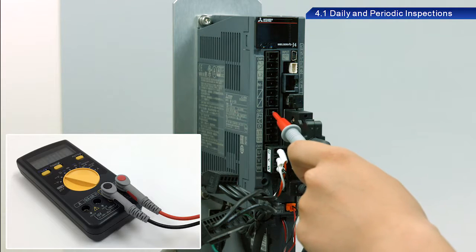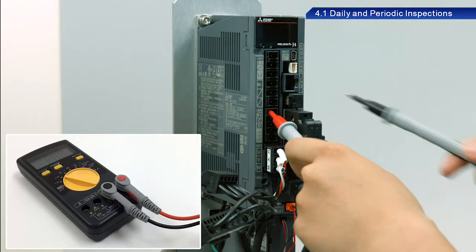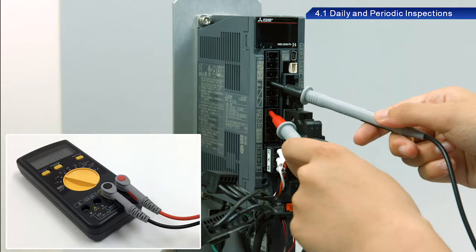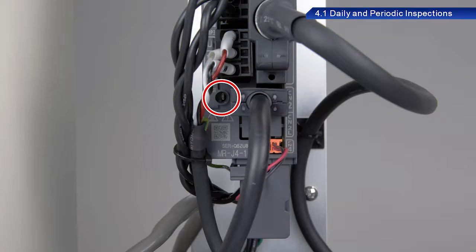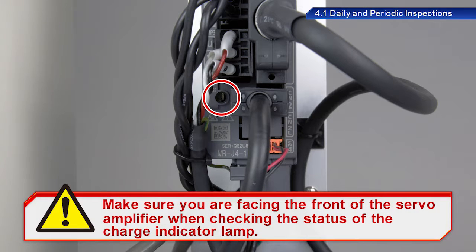Use a tester to check the voltage between the positive and negative terminals before replacement. Make sure you are facing the front of the servo amplifier when checking the status of the charge indicator lamp.